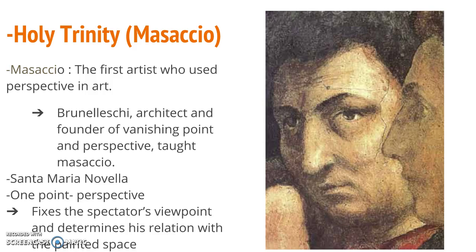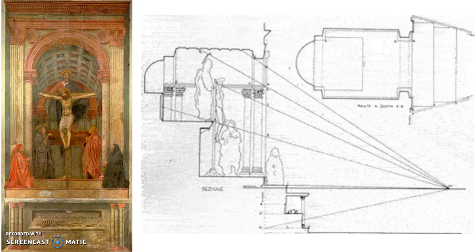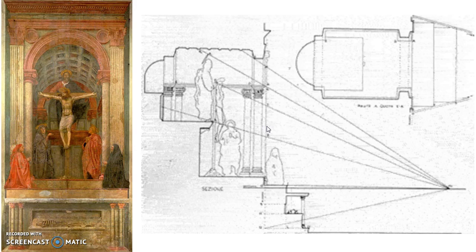Masaccio is also famous for putting himself in the drawing, just like other humanist artists did. Here is the Holy Trinity by Masaccio — this is how it works. This is the focal point, and he made people feel like they were looking into this picture, but actually it's on a two-dimensional wall. In conclusion, the Renaissance was an era of great development. It preserved ancient civilization and improved skills based on it. This is all we have — thank you.